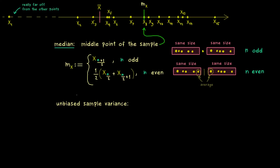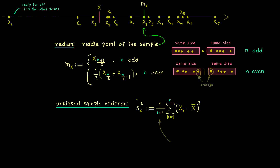The median and the sample mean give us a real number that represents the whole sample, but obviously they forget a lot about the details. To catch more about the spread of our data set we have something we call the variance — more precisely the so called unbiased sample variance, denoted S_x squared. It measures the quadratic spread around the sample mean: for each k we calculate the squared difference, sum them up, and normalize with 1/(n-1) in front. This factor makes the sample variance unbiased, which we will discuss in a future video. Here you might already guess it's used to estimate the real variance of the underlying probability distribution.